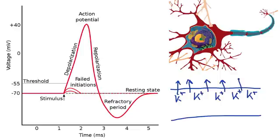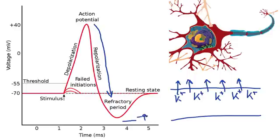And what that is going to do is cause repolarization, where the membrane potential is going down. Just like with sodium, potassium wants to reach its equilibrium potential, which is somewhere around negative 93 millivolts.